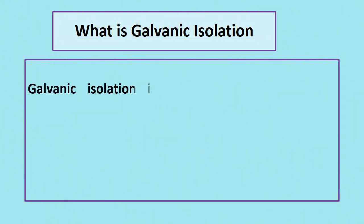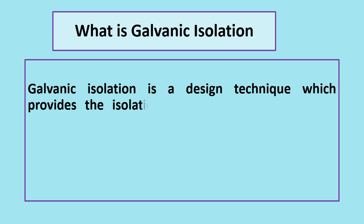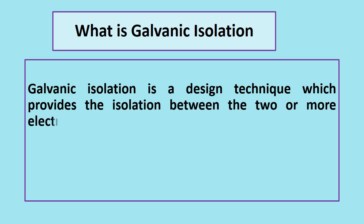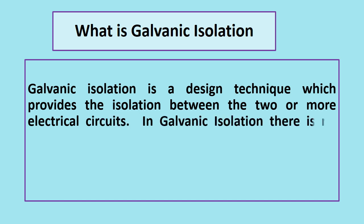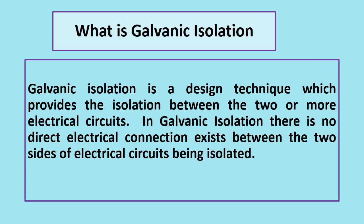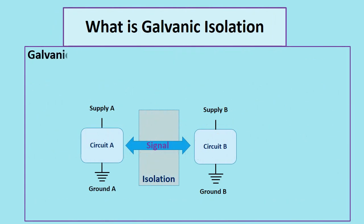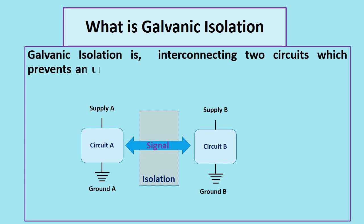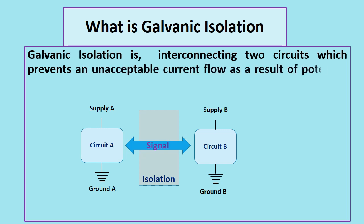What is galvanic isolation? Galvanic isolation is a design technique which provides isolation between two or more electrical circuits. In galvanic isolation, there is no direct electrical connection between the two sides of the electrical circuits being isolated. It interconnects two circuits which prevents an unacceptable current flow as a result of potential difference between the circuits being isolated.